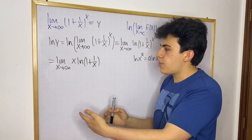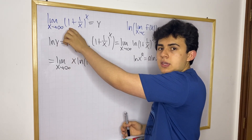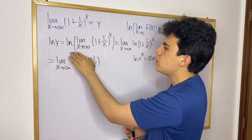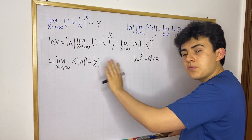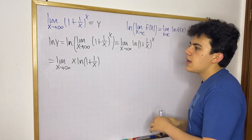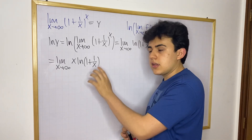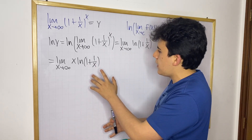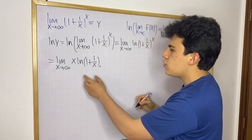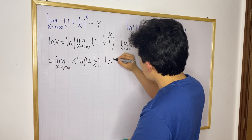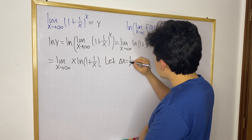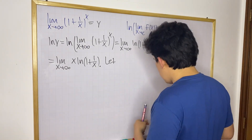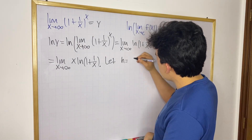Up until this point I have just rewritten the original limit — we set it equal to y, and rewrote ln(y). Now I want to use a linear approximation for the natural log of (1 + something). That something is going to be 1/x. Before continuing, I want to change the notation: let h equal 1/x. I'll use h so we can treat it as a single compact variable rather than a fraction.